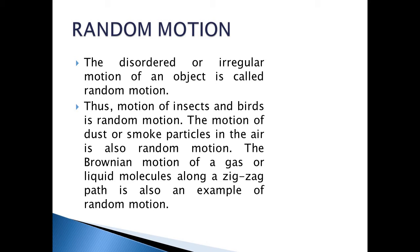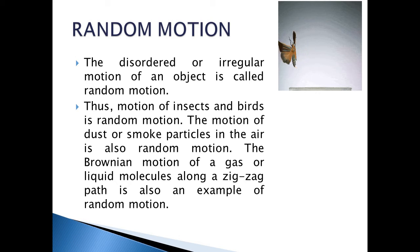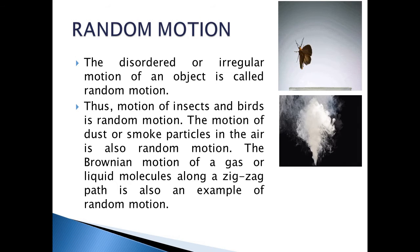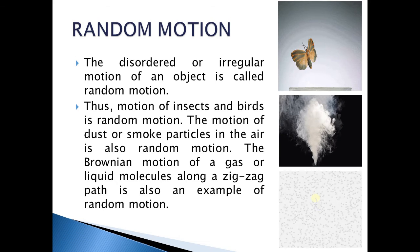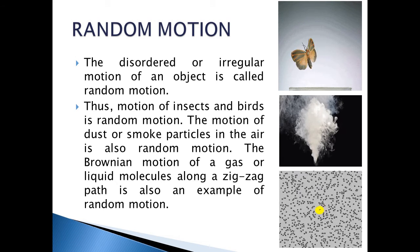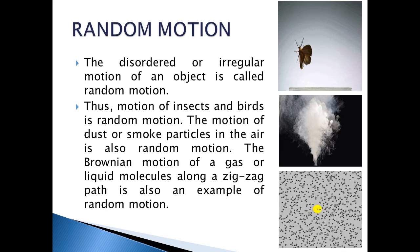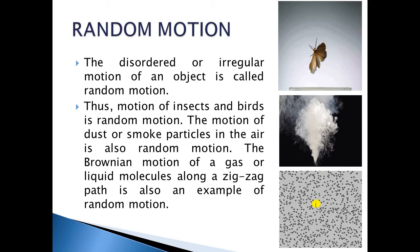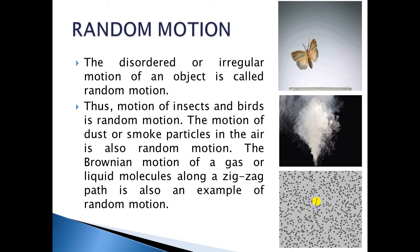Random motion: the disordered or irregular motion of an object is called random motion. The motion of insects and birds is random motion. The motion of dust or smoke particles in air is also random motion. The Brownian motion of gas or liquid molecules along a zigzag path is also an example of random motion.